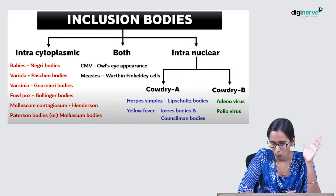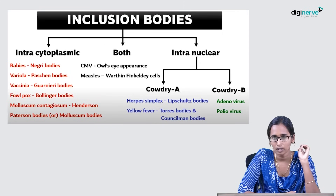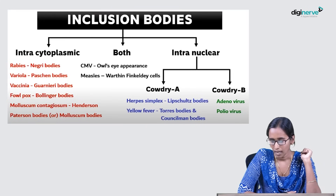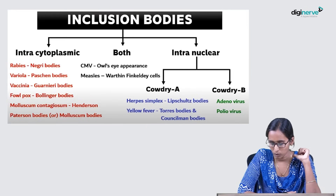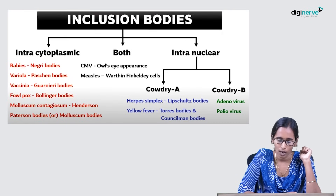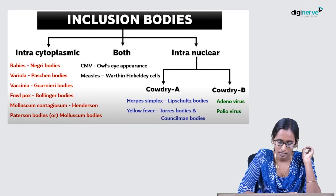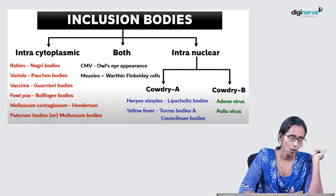For intranuclear inclusion bodies: Cowdry Type A includes Herpes simplex virus with Lipschutz body, and Yellow fever with Torres body and Councilman body. Cowdry Type B includes Adenovirus and Poliovirus. For both intracytoplasmic and intranuclear: CMV shows owl's eye appearance, and Measles shows Warthin-Finkeldey cells.